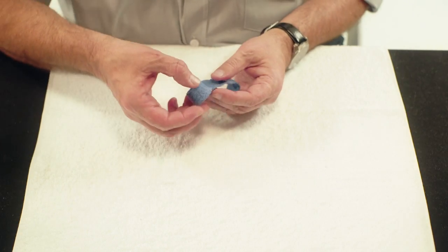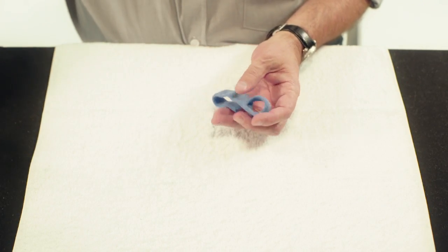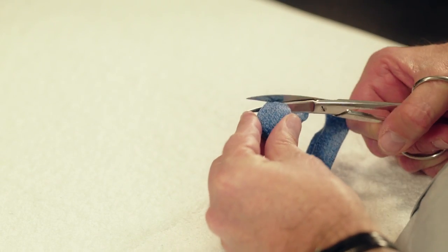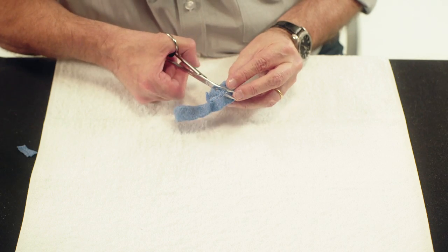Let the material harden and remove the orthosis. Round the edge on the side of the index and little finger.